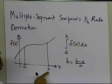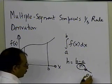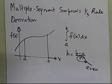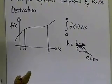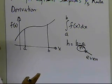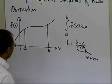However, what you've got to recognize is that n has to be even — it has to be an even integer. The reason why it has to be an even integer is because the single application of Simpson's one-third rule is applied over two segments. So if you apply Simpson's one-third rule twice, it will be four segments; three times, six segments. All of these numbers are even, so n has to be even.